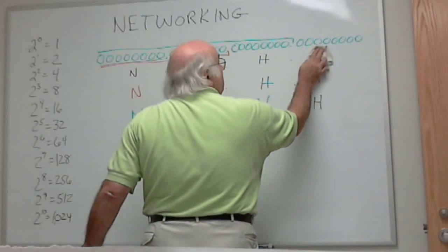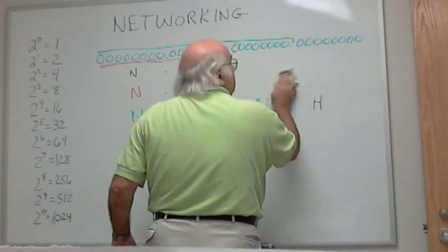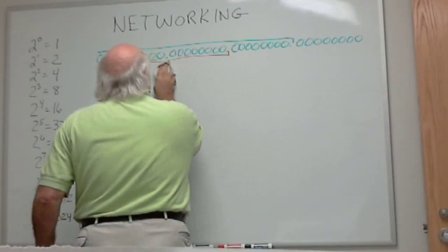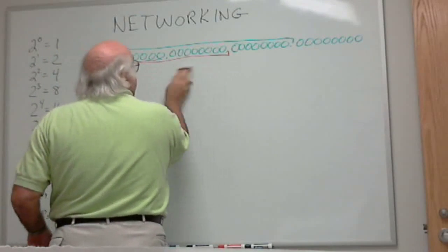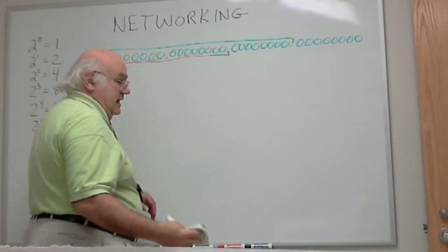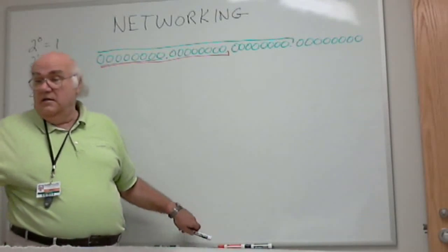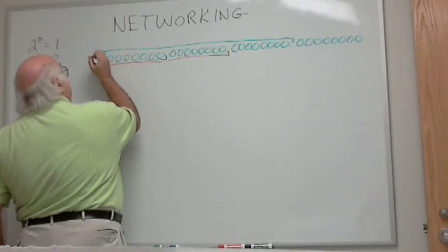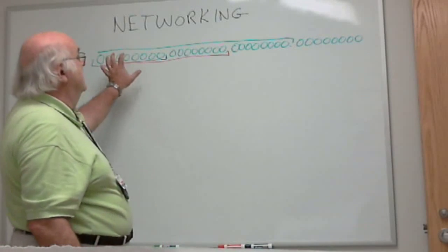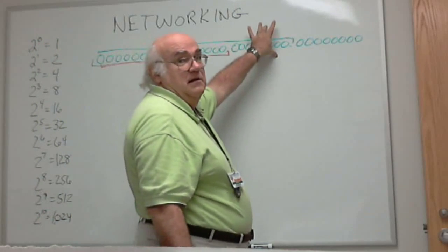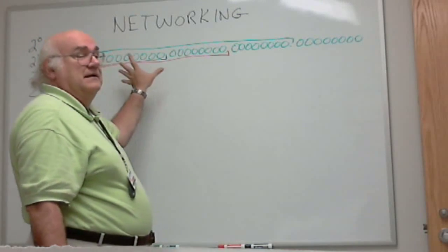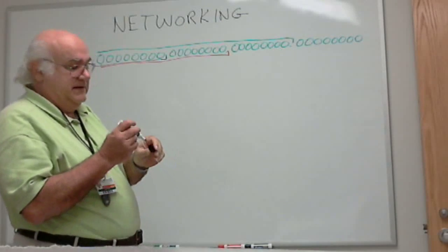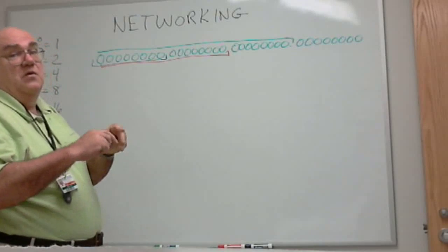This was classful. Let's think about how we could modify that a little bit so that it's easier to work with. Okay, so here were our three classes. One byte, two byte, three byte. Class A, class B, class C. That's how we did it for a lot of years. We're running out.